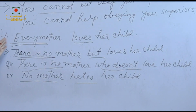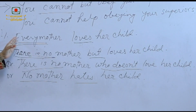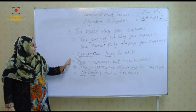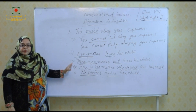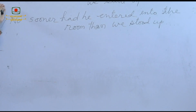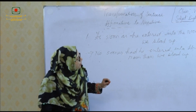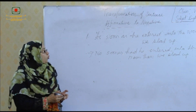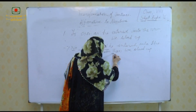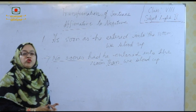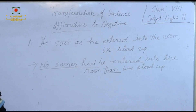Students, is it clear to you? If 'every' is used in an affirmative sentence, then we use these three types of sentences to turn it into negative. Another rule: if the sentence is 'As soon as he entered into the room, we stood up', we use 'no sooner had' and 'than' instead of the comma to turn it into a negative sentence.